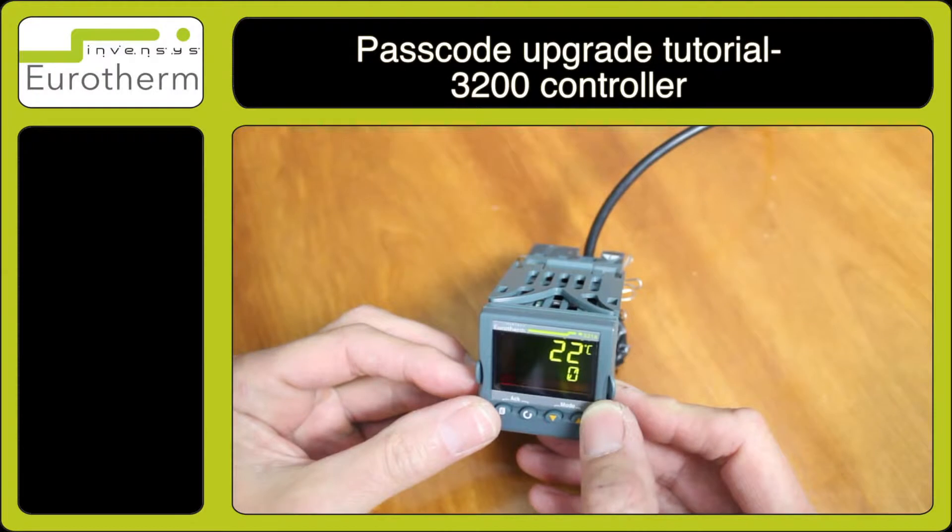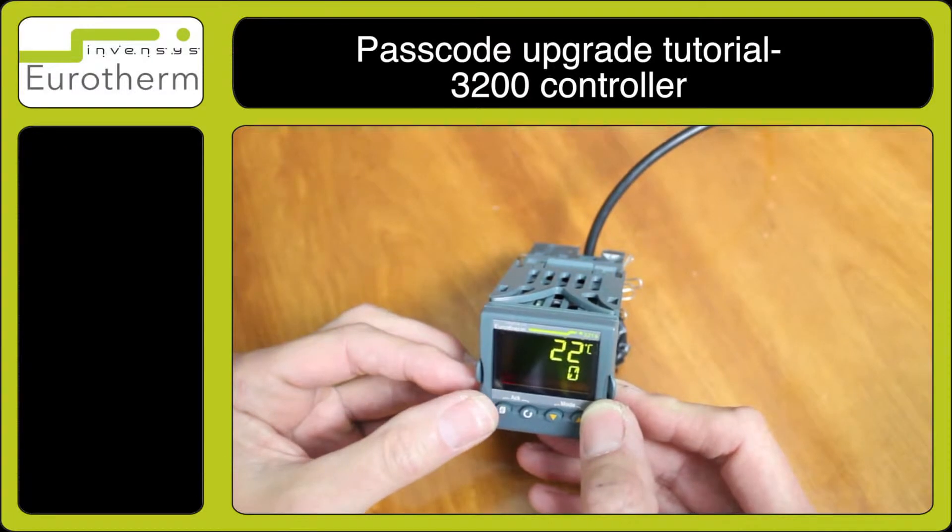In this tutorial, I will demonstrate how to find the passcode on the 3200. This is for when you wish to upgrade the AA relay or install the programmer option.